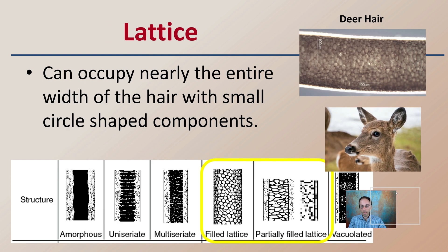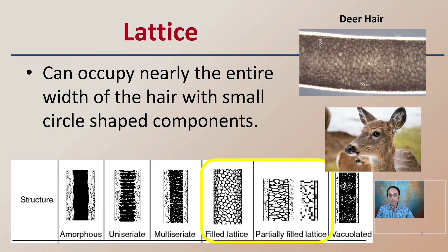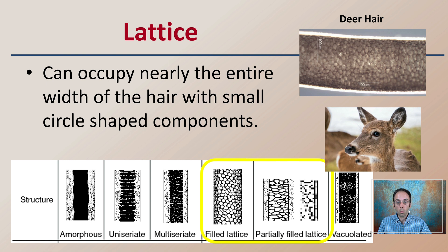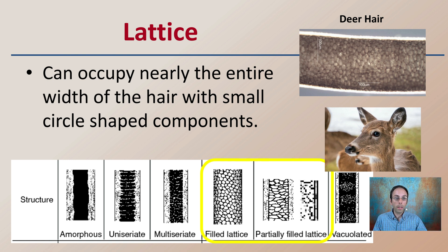The lattice structure can occupy nearly the entire width of the hair with small circular-shaped components. Looking closely at this deer hair sample, we can definitely see that. There is filled lattice and partially filled lattice — this white-tailed deer sample would be considered filled.